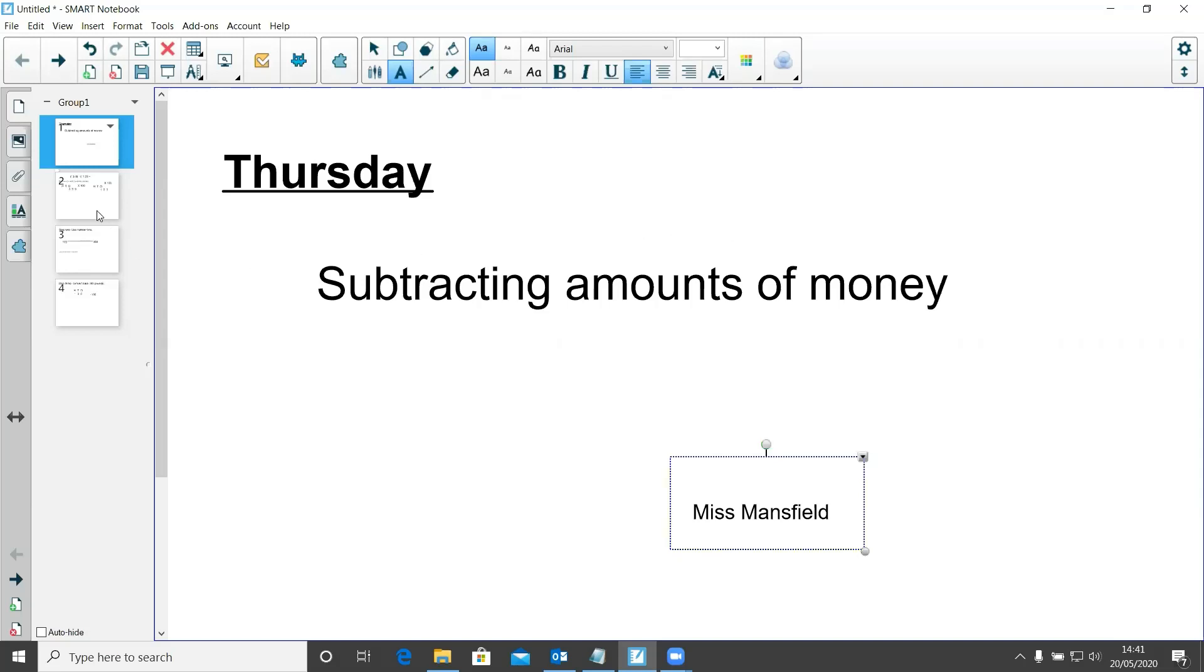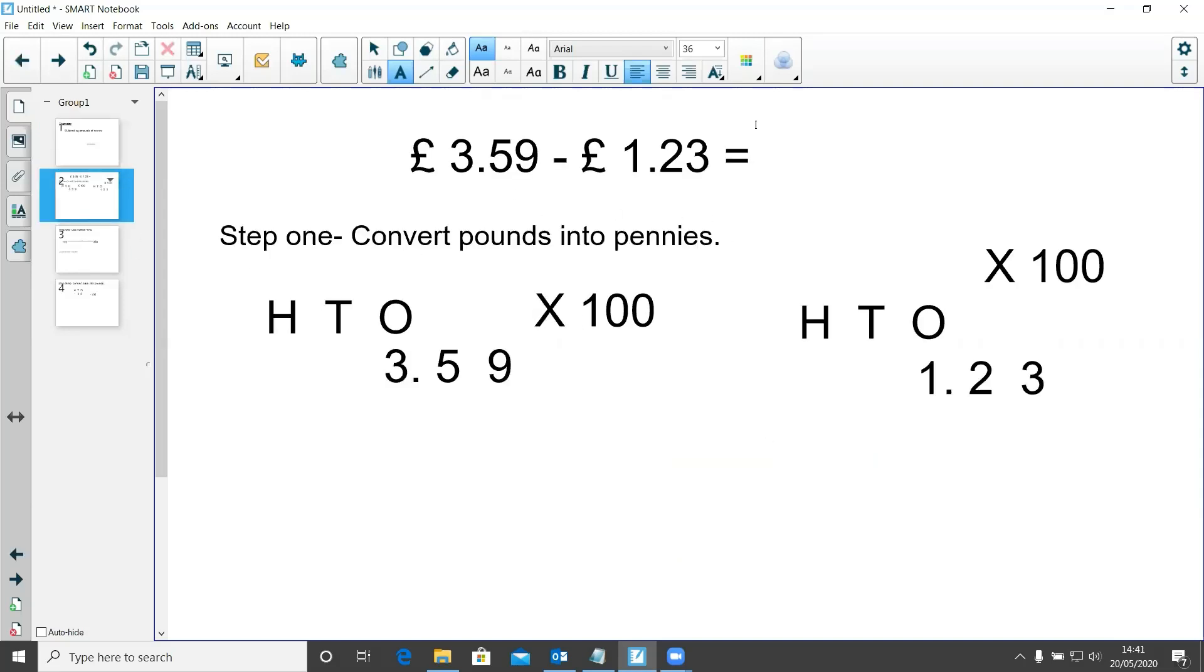Okay, so here I have a question for us: £3.59 take away £1.23. Now my first step is to convert my amounts in pounds into pennies, and we can do this by placing the amount in our place value grid of hundreds, tens, and ones. At the moment I've got the three underneath my ones column because that is a ones number, and then I have a decimal point and 59 on the other side because it is not a full amount of one yet.